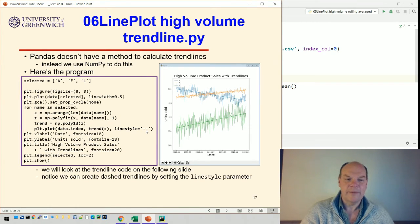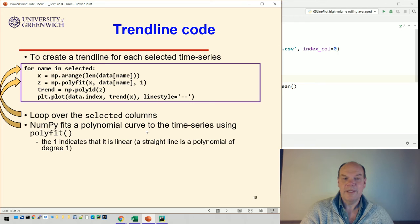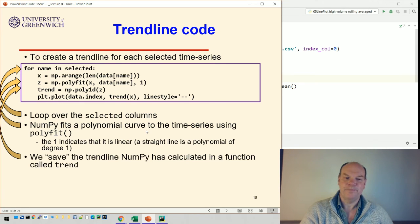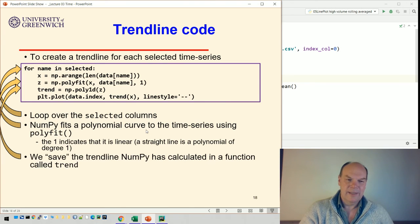To create a trendline, how do we do that? So we loop over all the selected columns. We use NumPy to get a polynomial curve using polyfit. And this the one there looks like it might not be very important, but one is the power of the regression. So this is a linear regression, so power one. If we want to do a quadratic, it's two, and a cubic is three. It refers to the polynomial that we're dealing with.